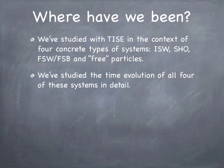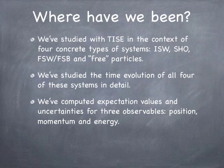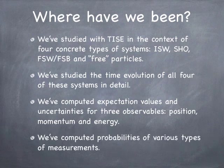Next, we've computed expectation values and uncertainties for really only three main observables: the position, the momentum, and the energy. And finally, we've computed probabilities of various types of measurements involving those observables. So the probability of the particle being between here and here, or the probability of the momentum being in a certain range, or the probability of the energy having a certain value. But it's always surrounded, basically, those three observables.